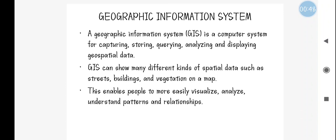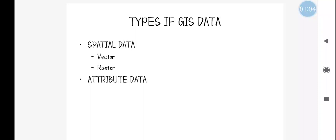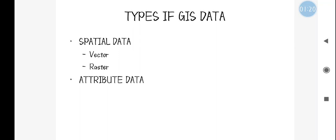The best example for representing a GIS application is GPS. We use Google Maps today — that is one of the best examples of a GIS application. By using GPS you can visualize your data in any type, such as terrain view or satellite view. You can analyze the data, find directions, and use the application for various purposes. Coming to the types of GIS data: